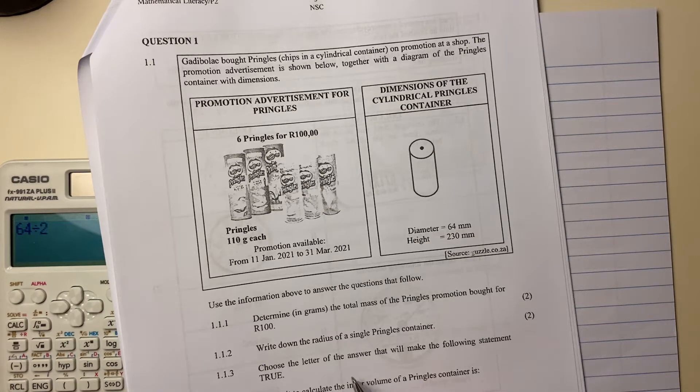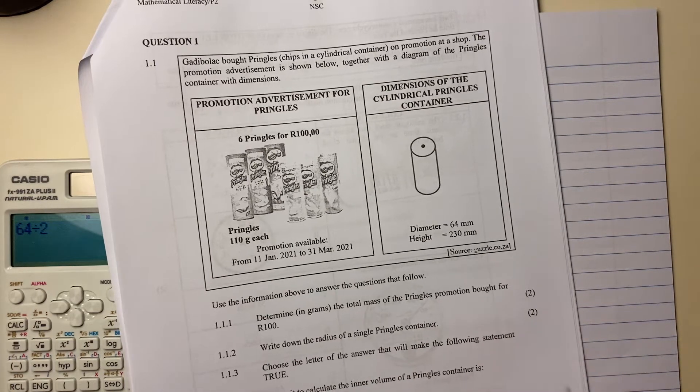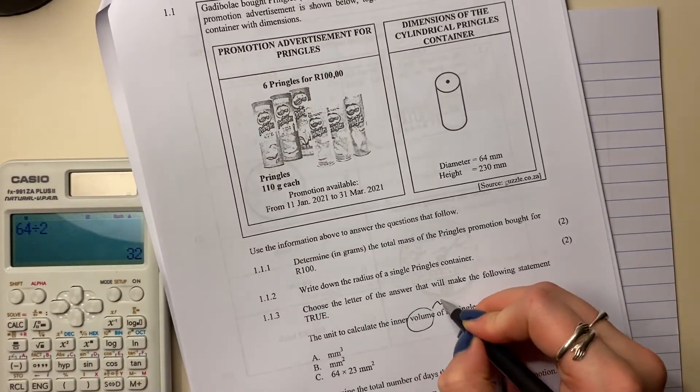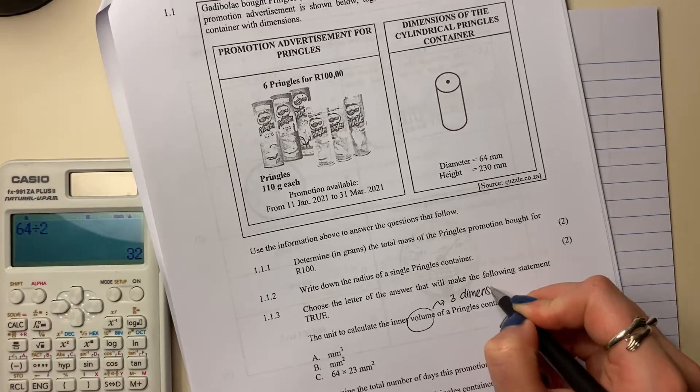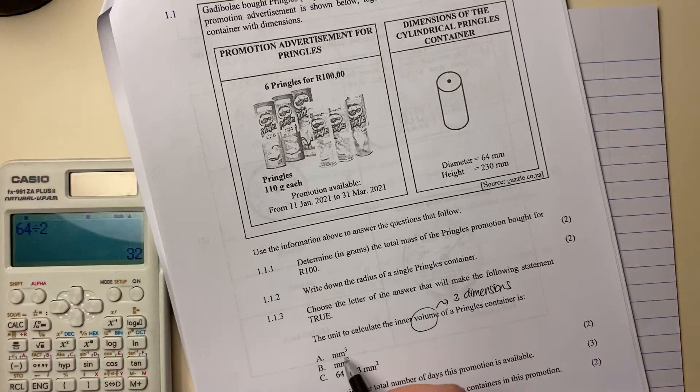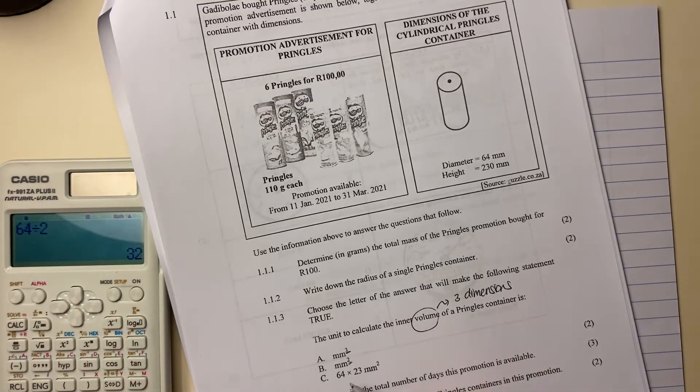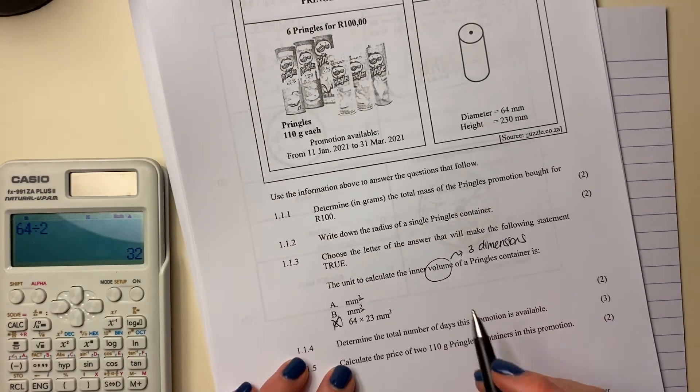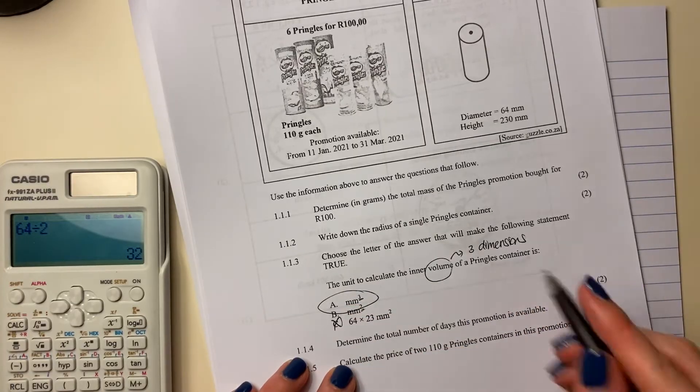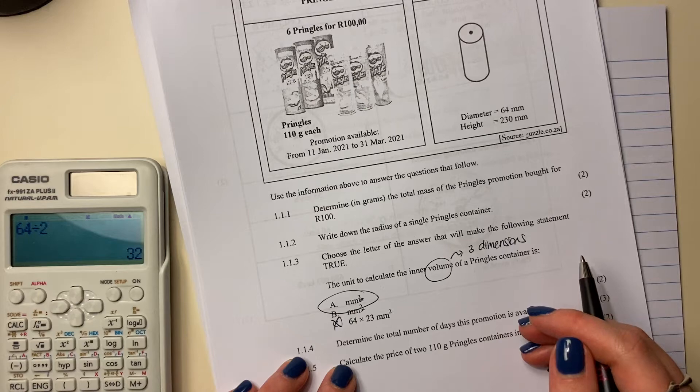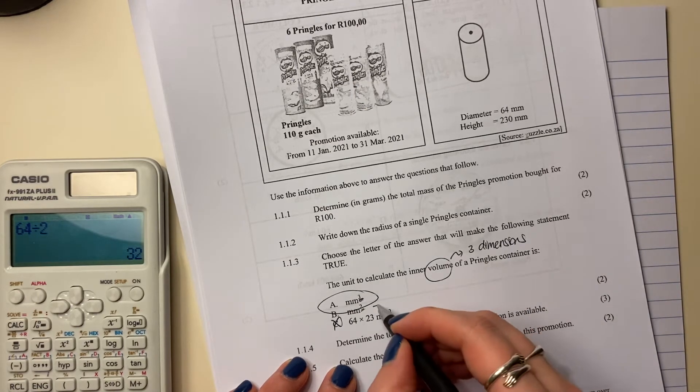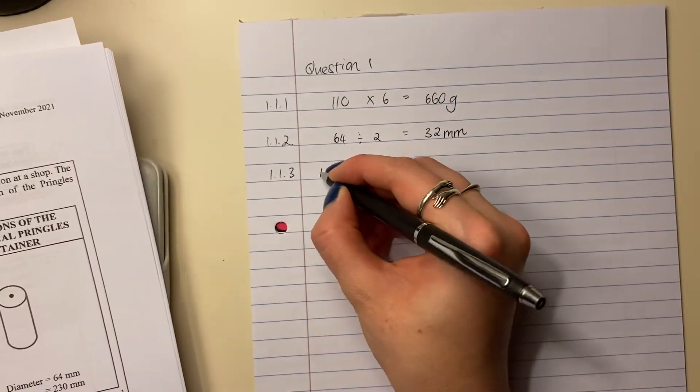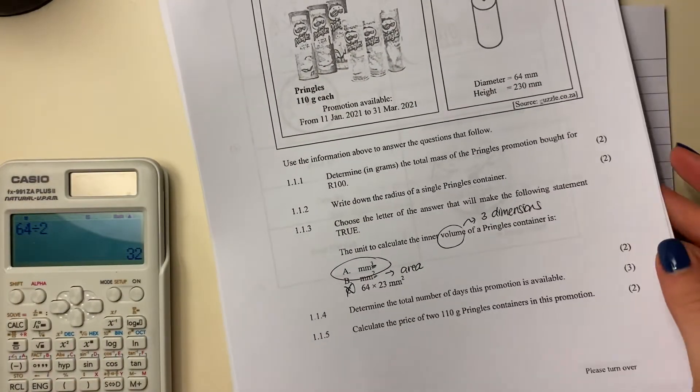1.1.3, choose the letter of the answer that will make the following statement true. So the unit to calculate the inner volume - volume we know is three dimensions, you should know that by now - of a Pringles container, is it millimeters to the 3, millimeters to the 2, or actually having numbers? Now we know that this one is wrong because it didn't ask for the actual value, it asked for the unit. So the unit, it has to be A because it's volume, three dimensions, and that's what the little exponent indicates. To the power of 2 would be area. So we're going to say 1.1.3 and we're going to say A. Let's move on to the next question.